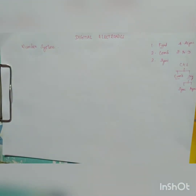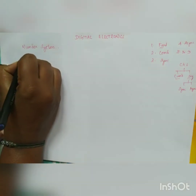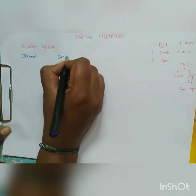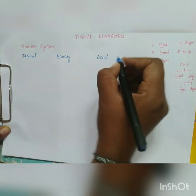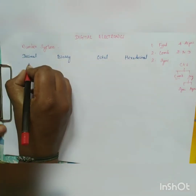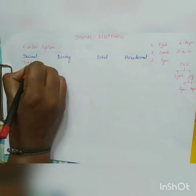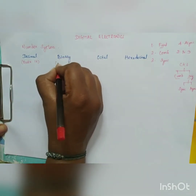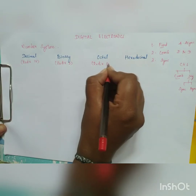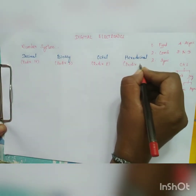The number system is classified into four types: decimal, binary number system, octal number system, and hexadecimal number system. The radix for decimal is 10, for binary the base is 2, for octal the base is 8, and for hexadecimal the base is 16.